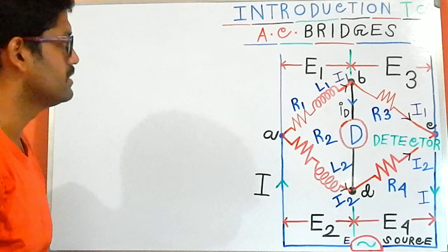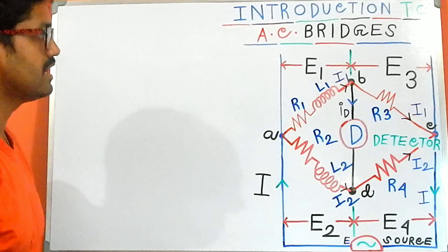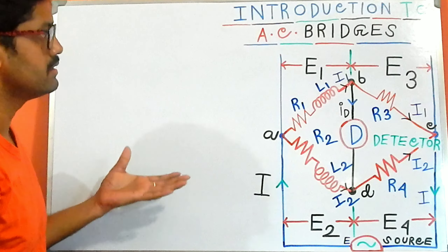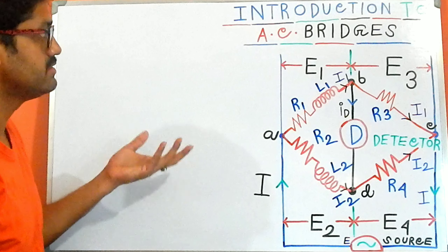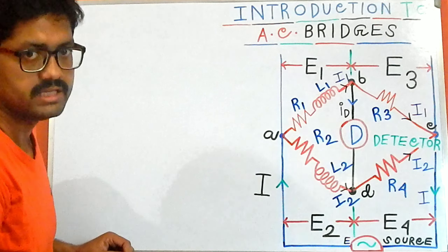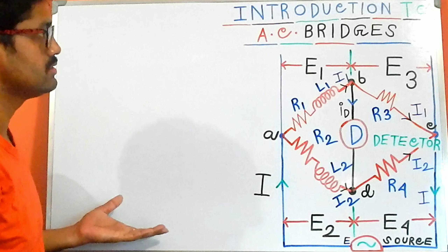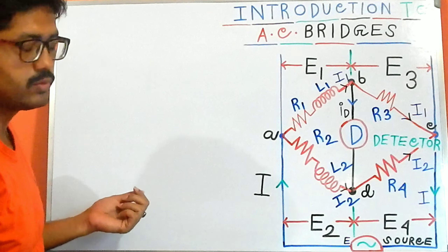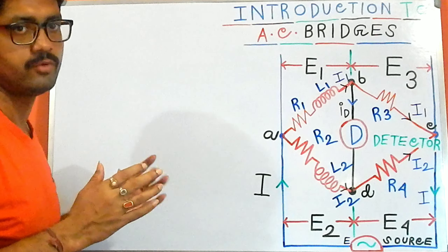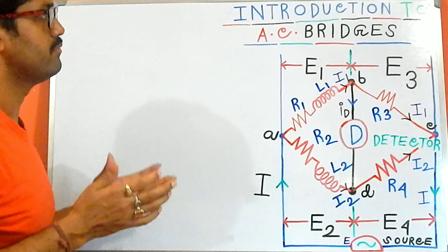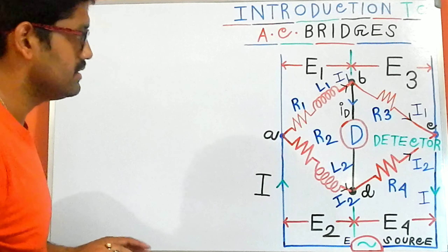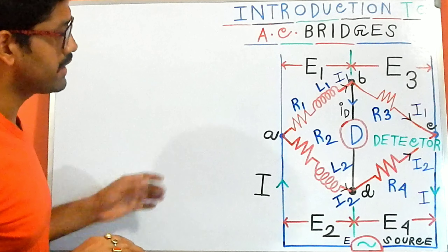Hi, we are Engineering Brothers. In our previous classes I had given you the basic formulation of how to get the idea of the balanced condition or how to say that the AC bridges are at balanced condition, and I had given you all the equations and relationships. But right now I want to give you the general idea or the general perspective on how to solve a bridge formulation.